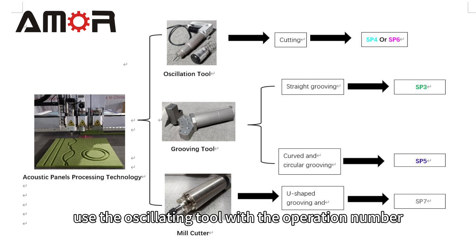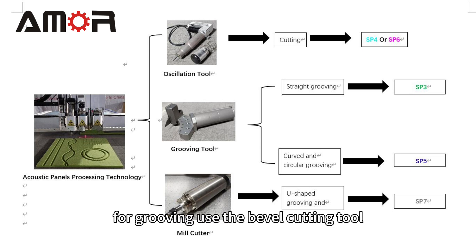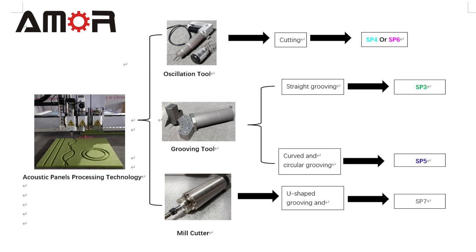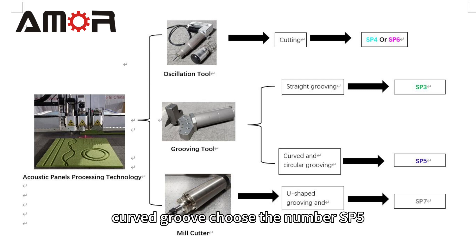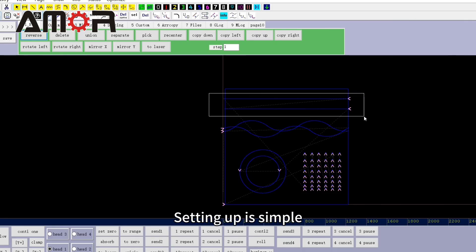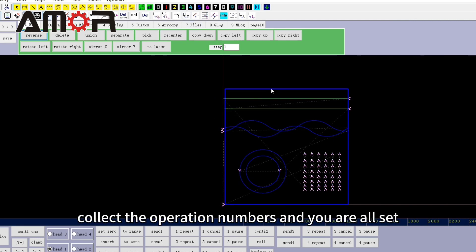For cutting, use the oscillating tool with operation number SP4. For grooving, use the bevel cutting tool — choose straight grooving number SP3, or for curved grooves, choose number SP5. Setup is simple: select the graphic, click the operation numbers, and you are all set.